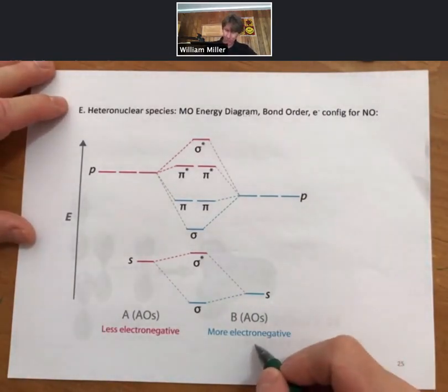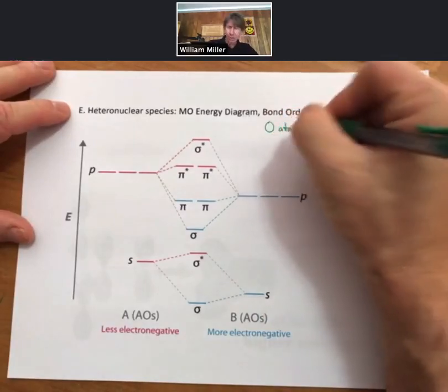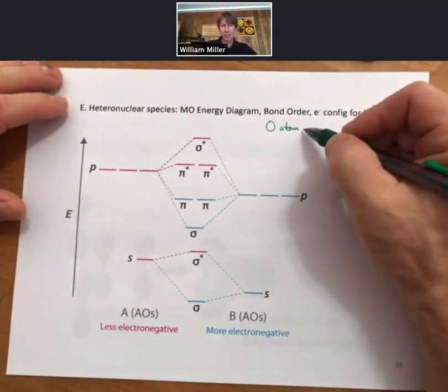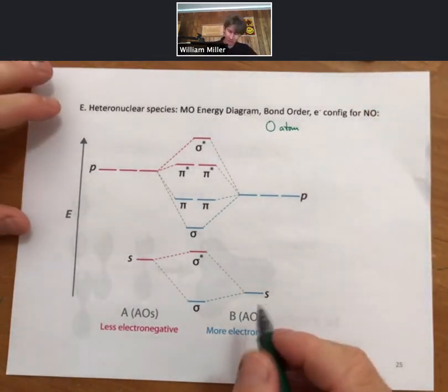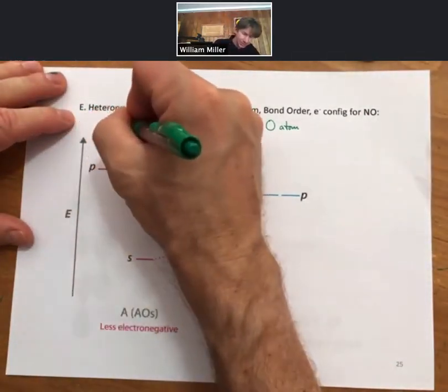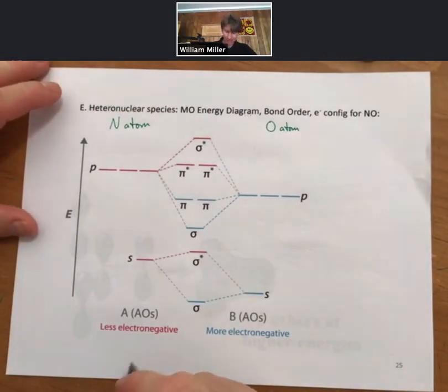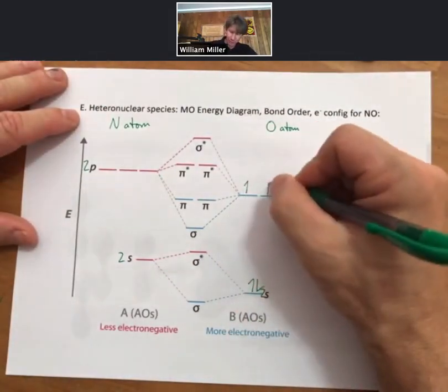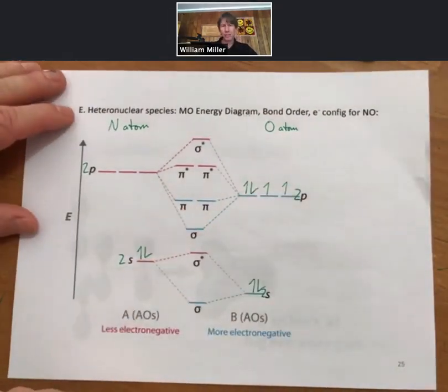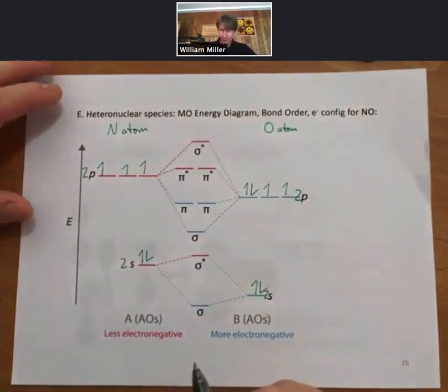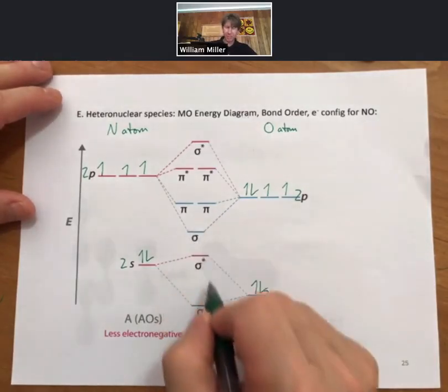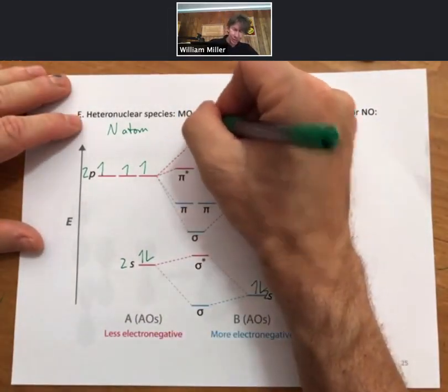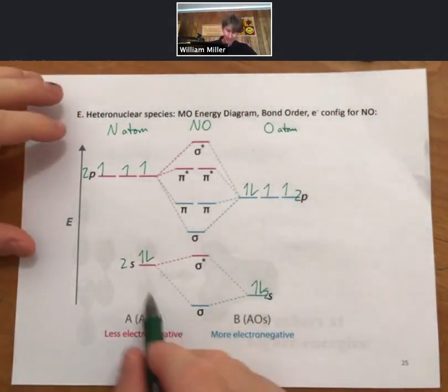Whichever atom is more electronegative—that's going to be oxygen—will be lower in energy. Another way of thinking about that is that the atom that's more electronegative is also going to be smaller. It's going to have electrons pulled closer to the nucleus, and those will be lower energy electrons. We also have our nitrogen atom. These are going to be 2s and 2p. For oxygen: 2s2, 2p4. For nitrogen: 2s2, 2p3.